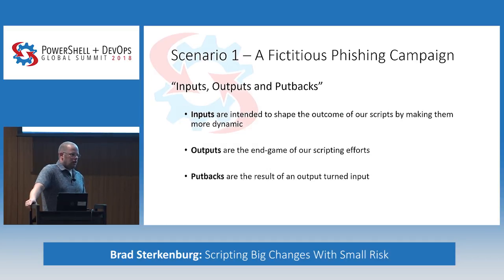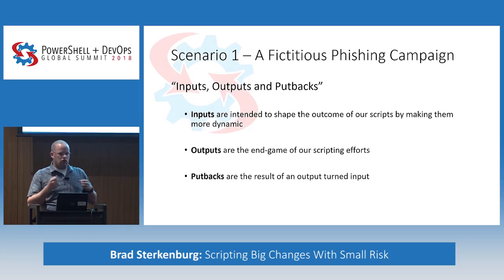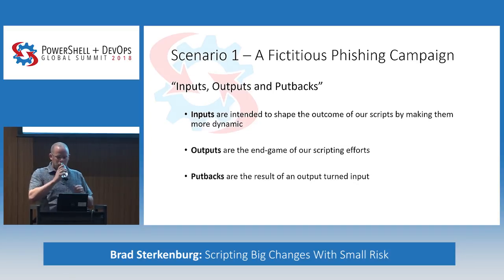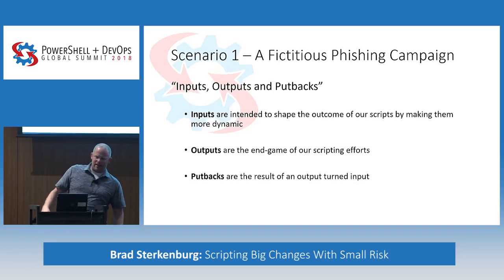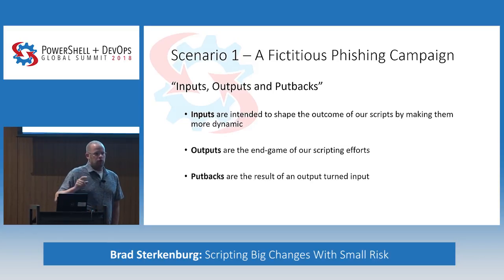We do it through something I call inputs, outputs, and putbacks. You all know what inputs are — the things we feed into a script or automation process to make it more dynamic. Outputs are the end game of our scripting efforts — the thing that comes out of the script when we're done. And putbacks are the result of an output turned input.